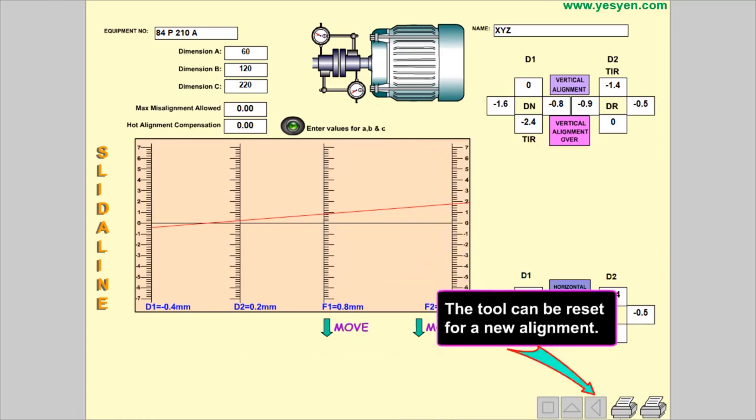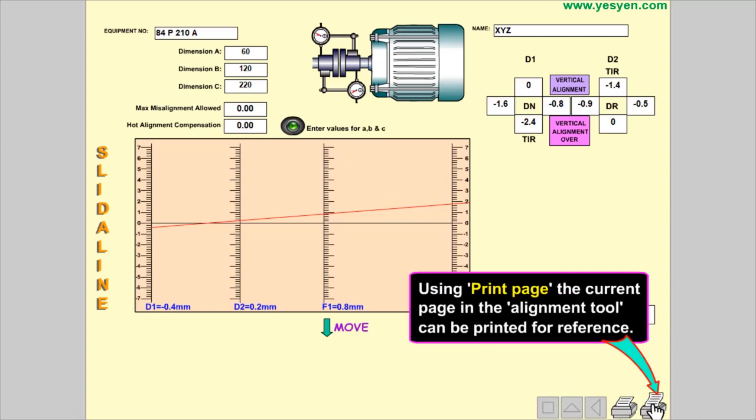The tool can be reset for a new alignment. Using Print page, the current page in the alignment tool can be printed for reference.